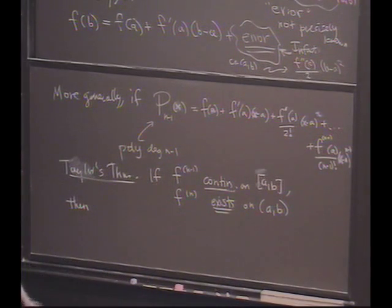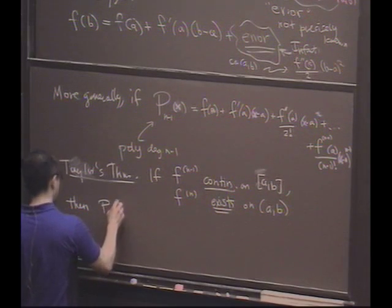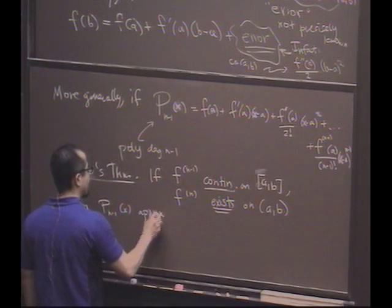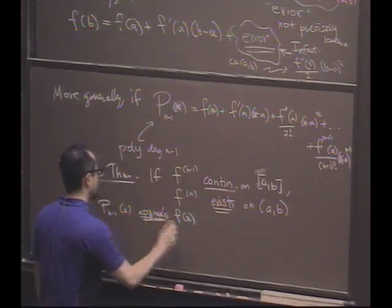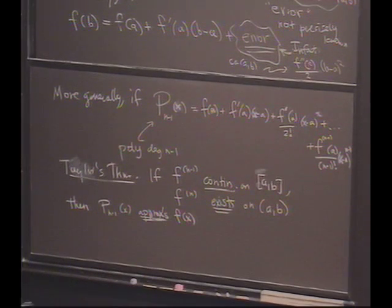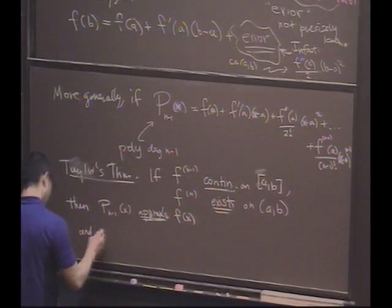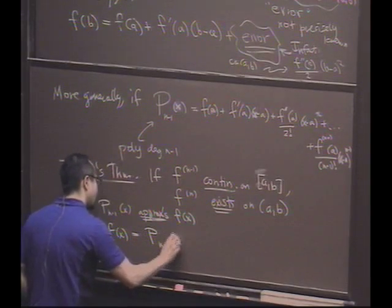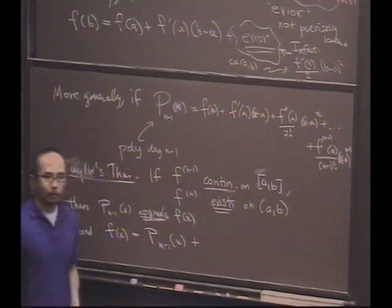Then, something amazing is true. First of all, p_{n-1} is a polynomial, so it approximates f. That's the message here. It's going to be an excellent polynomial approximation. How excellent? If you have f(x), it's going to be the polynomial p_{n-1}(x) plus an error term.